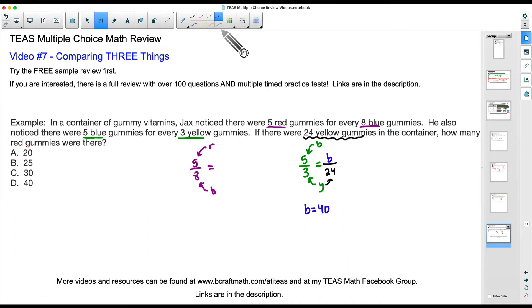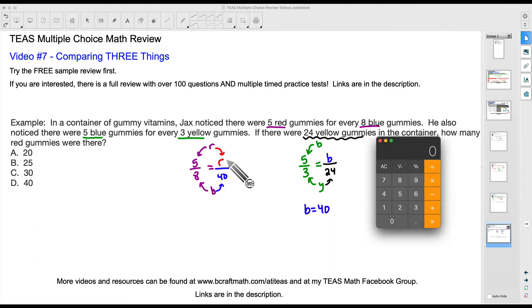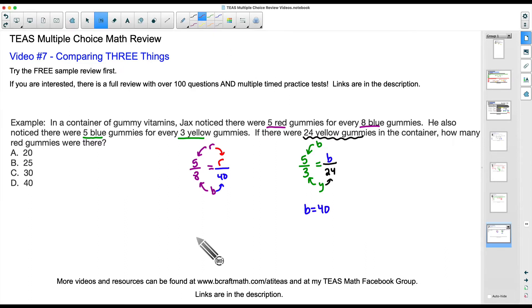Well, what can we do with this 40 blue? That will go over here to the bottom of this fraction, and now we can solve for the number of red. That's what we're trying to find. So let's do the same process. Multiply the 5 and the 40, and immediately divide by this 8 right here. So 5 times 40 divided by 8, we get 25 red gummies. And that is our final answer to this problem.